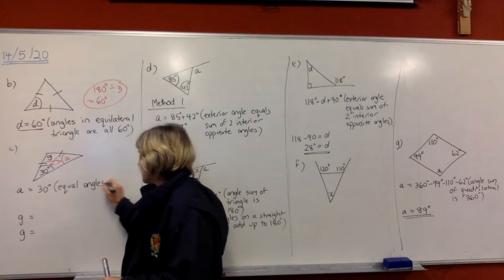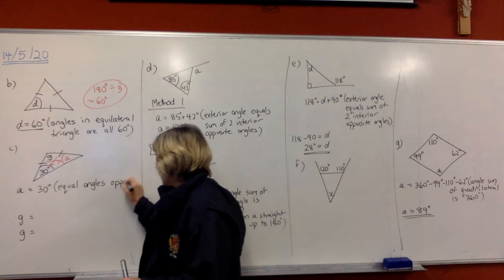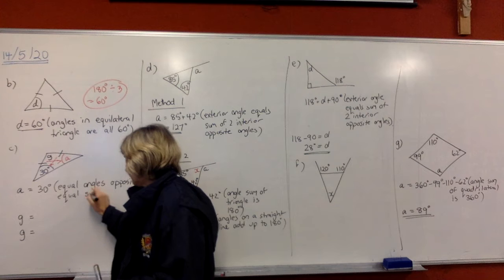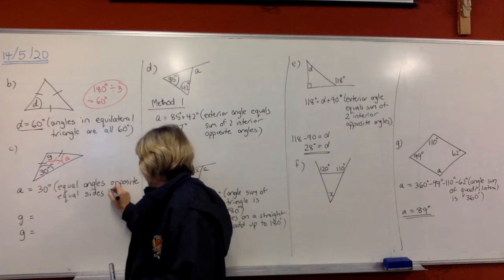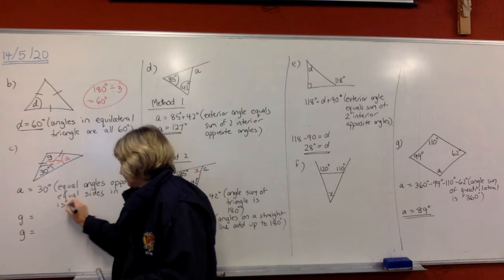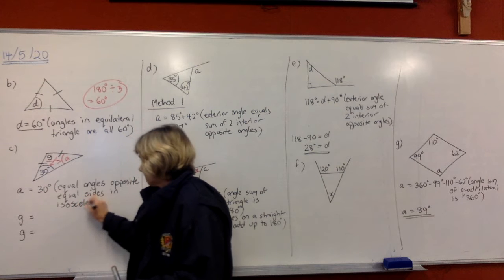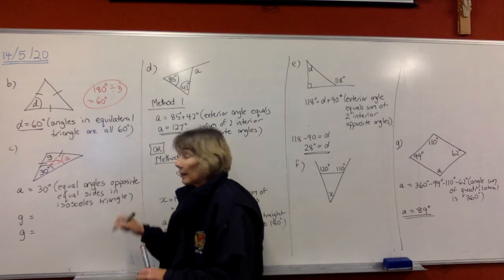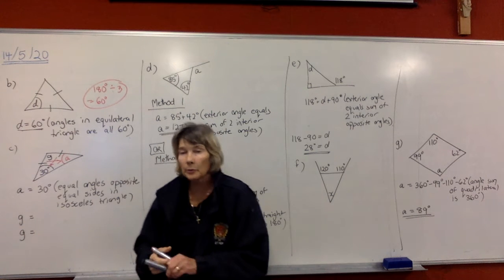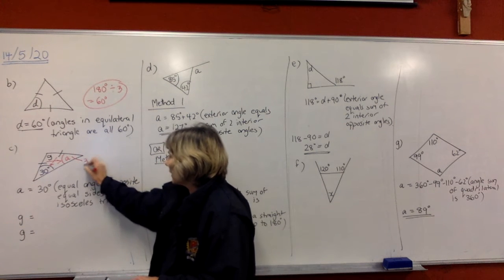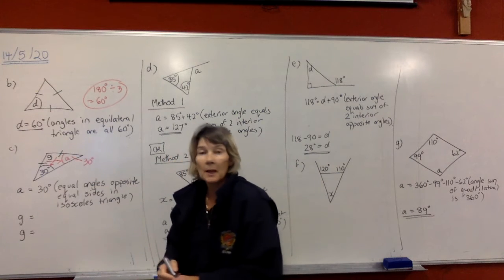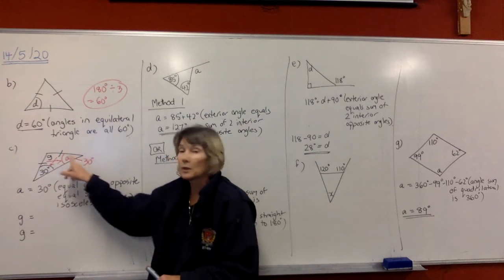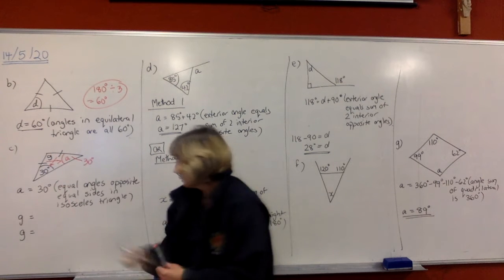The reason for that is: equal angles opposite equal sides in an isosceles triangle. Write that in so you can see what you're doing — that is 30 degrees. Now we're going to look at what G is, knowing that the angles in a triangle add up to 180.